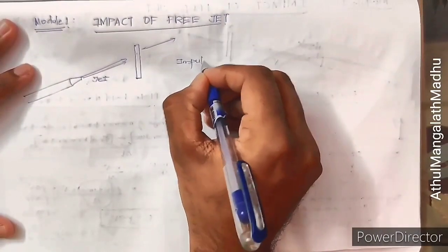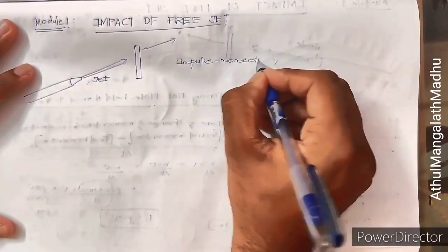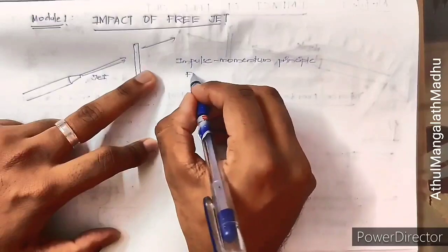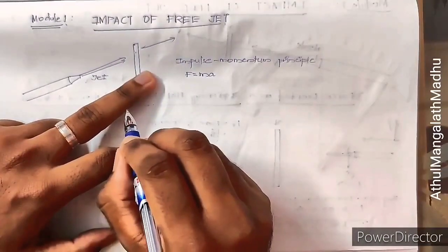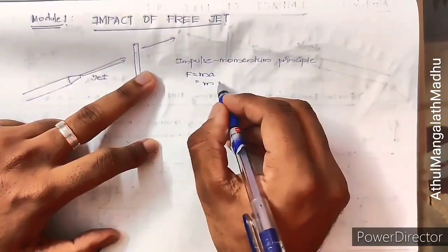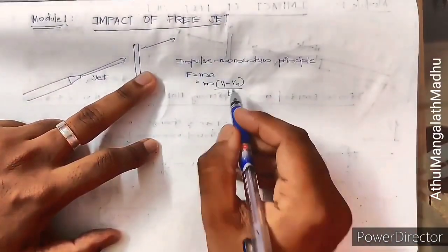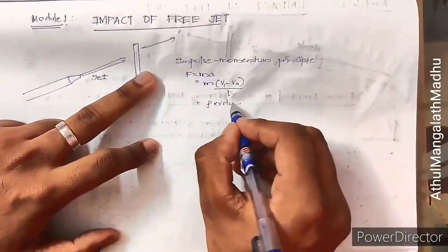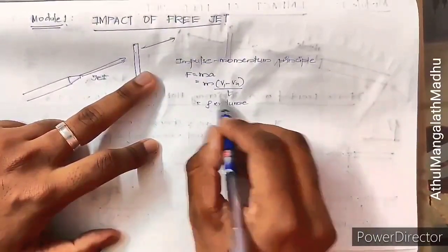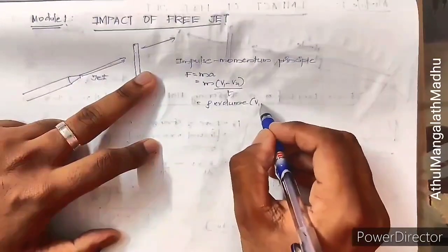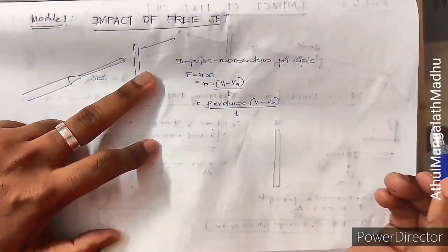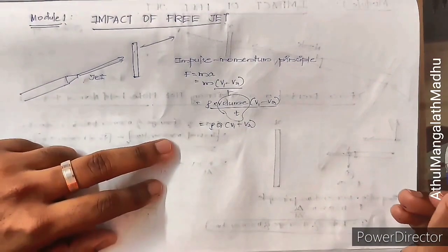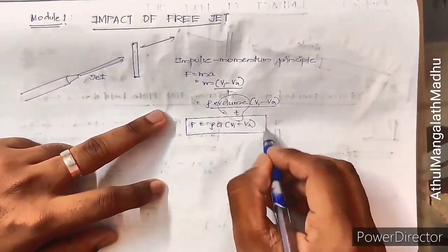To calculate the impact of the jet, we use the impulse-momentum principle. Force is equal to mass into acceleration, which is mass into change in velocity (v1 minus v2) divided by time. Mass equals density multiplied by volume, so substituting: force equals density into volume over time into (v1 minus v2). Volume over time is discharge Q, so force equals ρ·Q·(v1 minus v2).